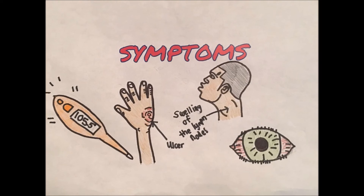Symptoms of pneumonic Tularemia include a dry cough, difficulty breathing, a high fever, and chest pain. Symptoms of typhoidal Tularemia include a high fever, extreme fatigue, diarrhea, vomiting, enlarged spleen, enlarged liver, and pneumonia. Severe and untreated cases of Tularemia may cause chronic heart failure, swelling of the membrane that surrounds your brain and spinal cord, and even death.